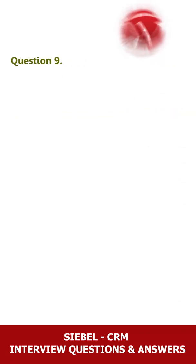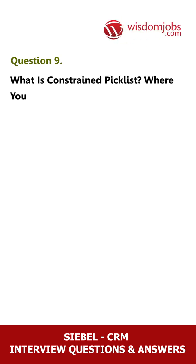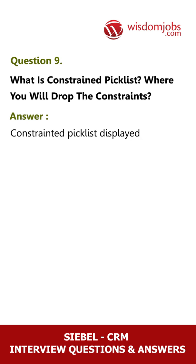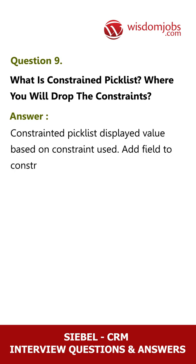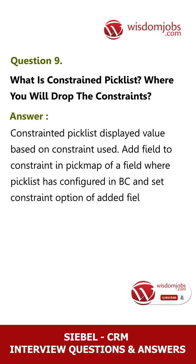Question 9: What is a constrained picklist and where do you drop the constraints? Answer: A constrained picklist displays values based on a constraint. Add a field to the constraint in the pickmap of a field where a picklist has been configured in the BC, and set the constraint option of the added field to true.